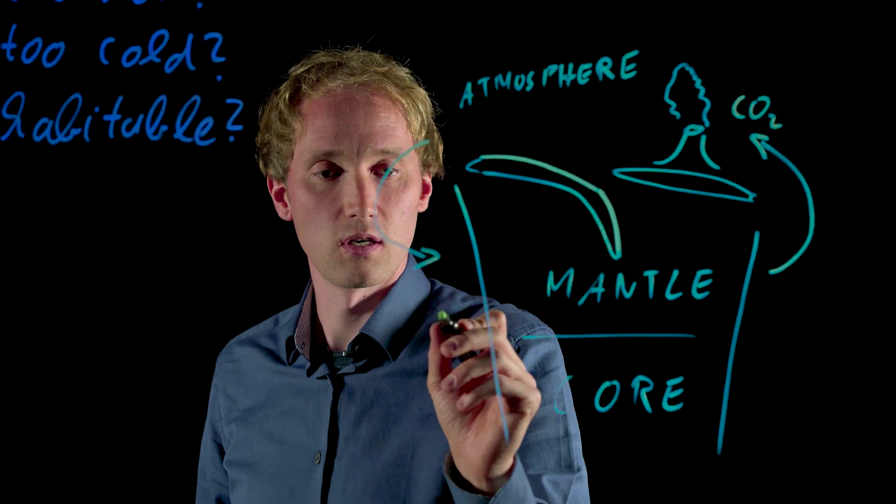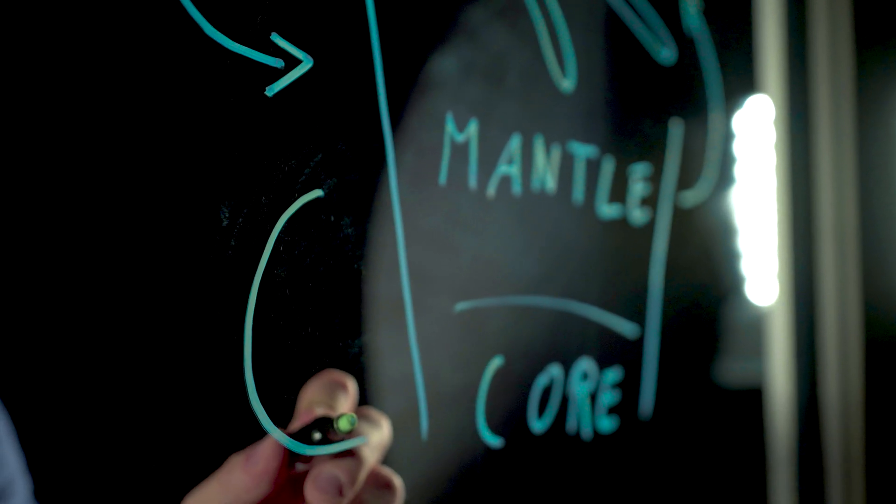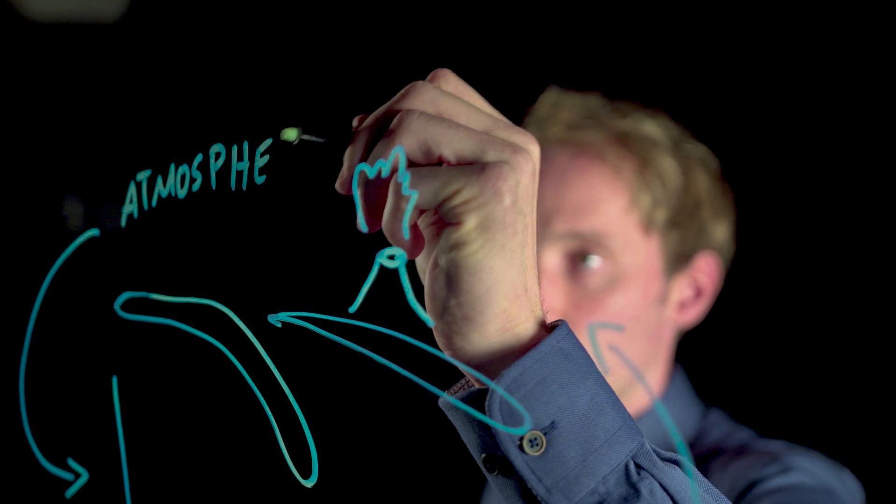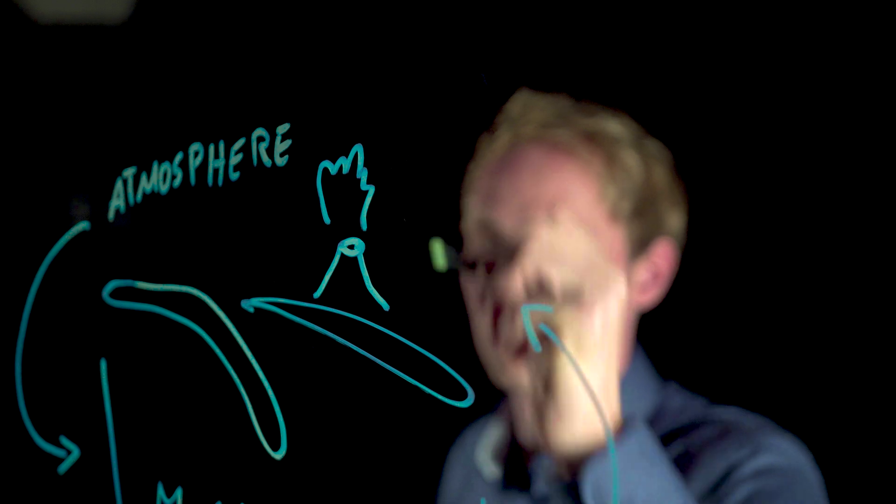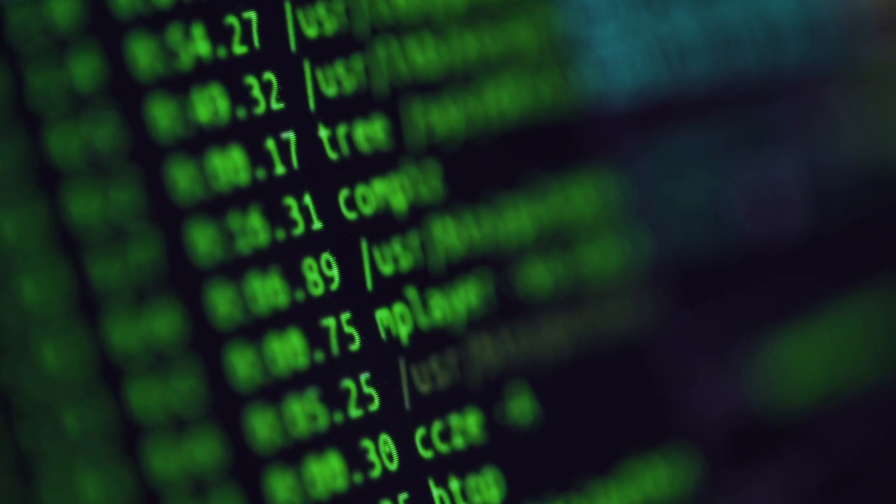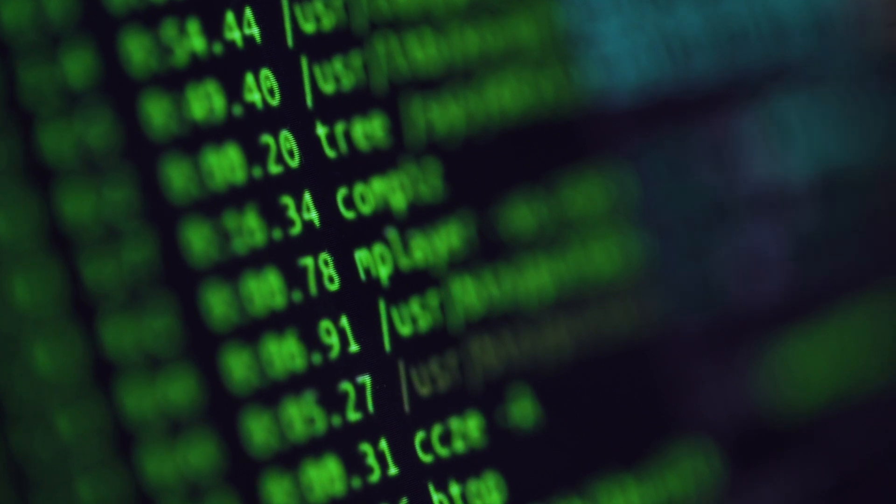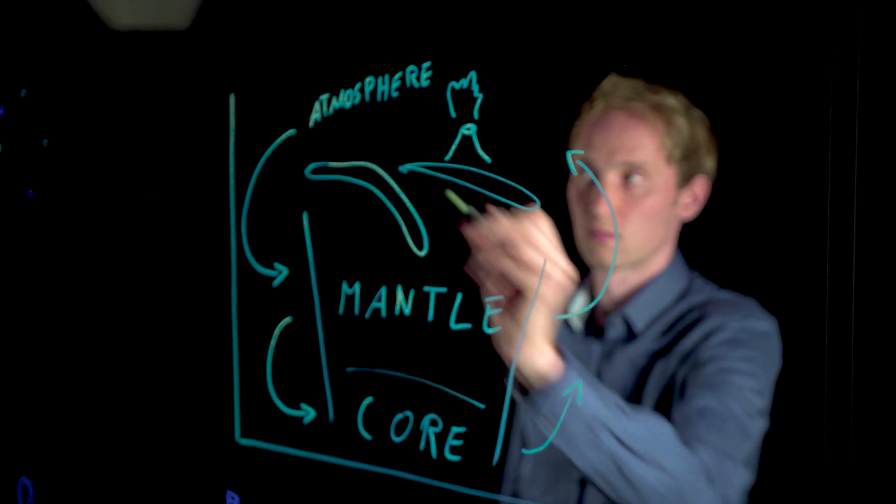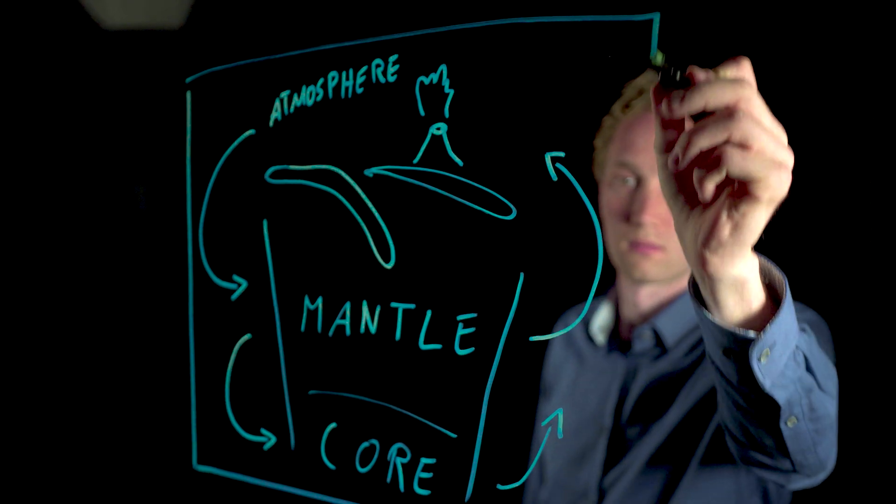Mantle convection leads to a strong cooling of the core, which in turn helps to maintain the magnetic field. And the magnetic field helps to protect the atmosphere. We can describe all these different processes by mathematical equations and put it into a computer model. All these processes help to keep the planet habitable in the long term.